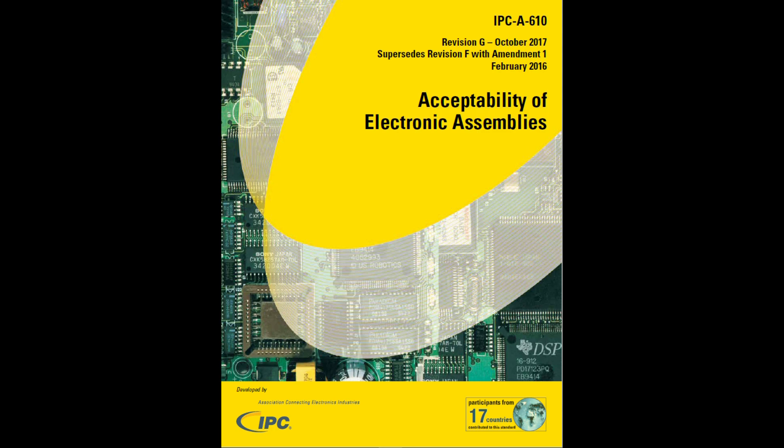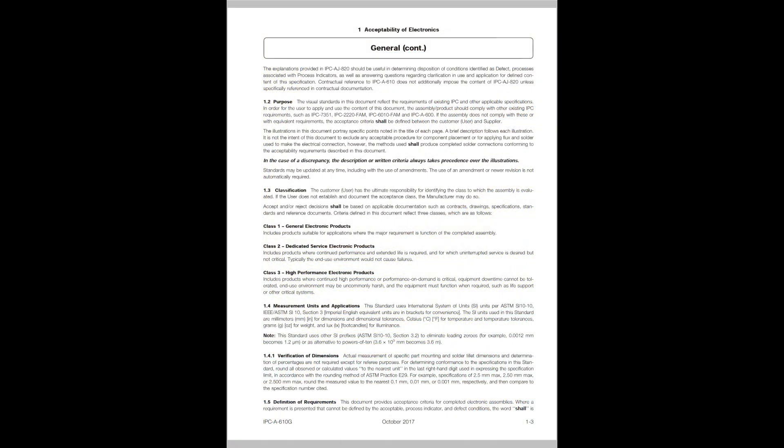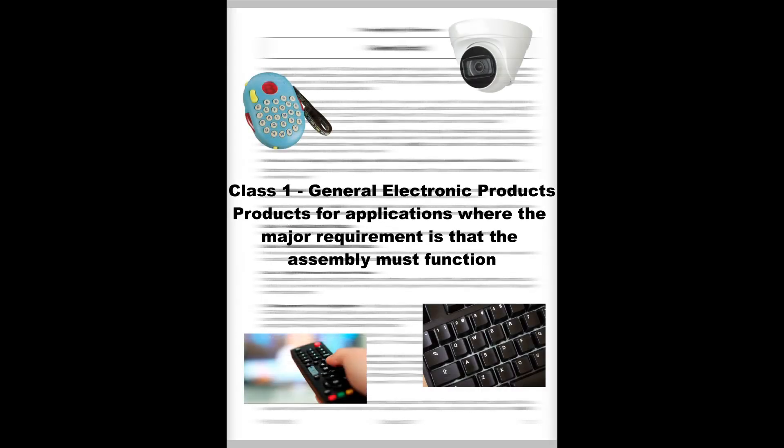The IPC A-610 groups electronic assemblies into three classes. These classes are based on the intended end-use environment for the assembly. Class 1, general electronic products, are those where the major requirement is that the assembly is functional.